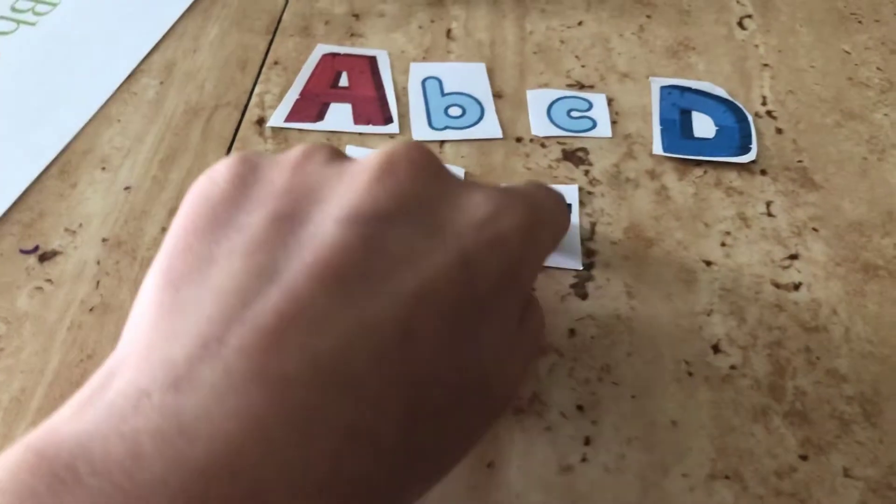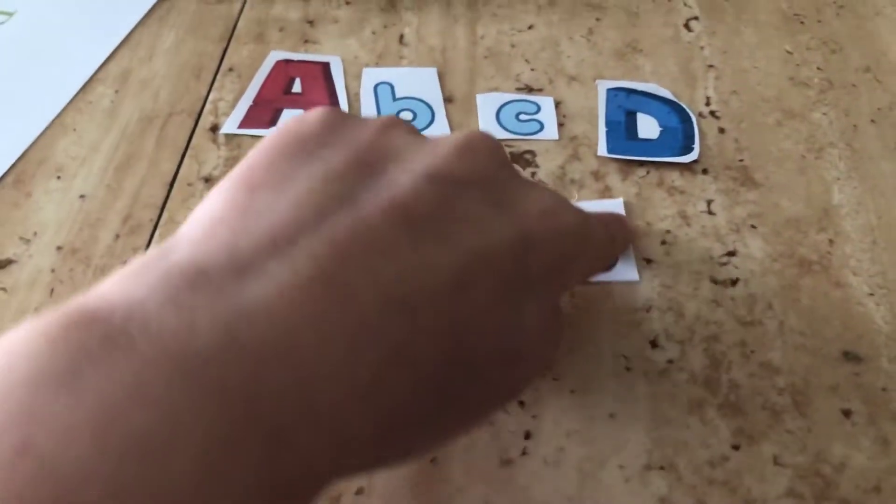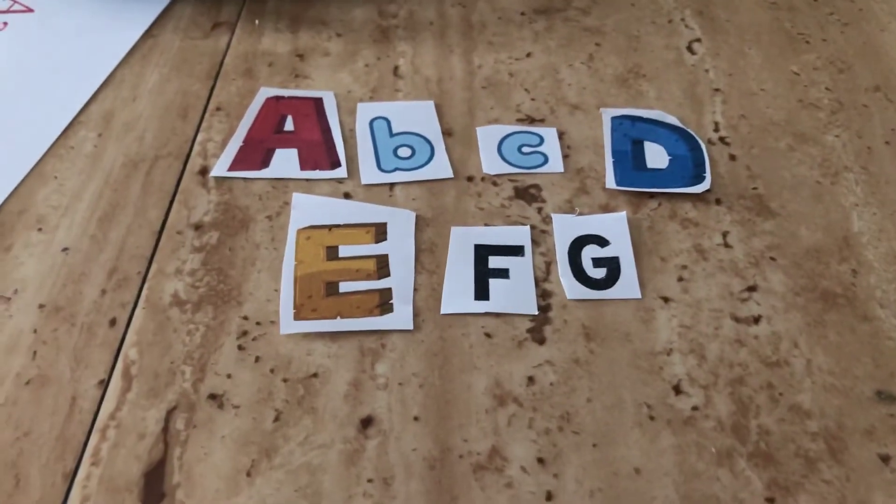Let's see. E, and F, and G. So we have seven letters.